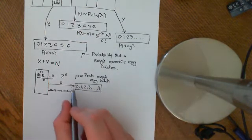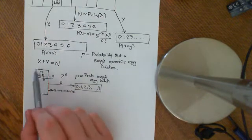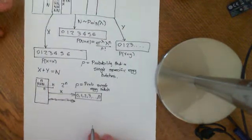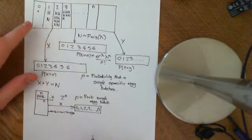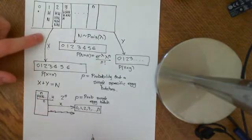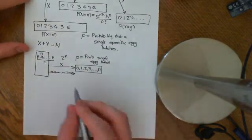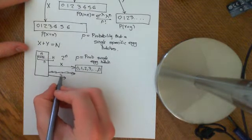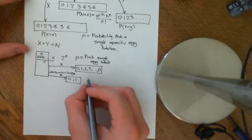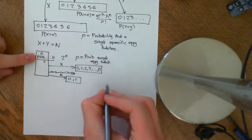This is binomially distributed. We can see that by setting up random variables X1, which maps onto 0 or 1: it maps to 1 if the first egg hatches, and to 0 if the first egg doesn't hatch.